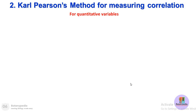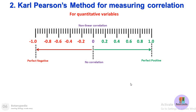Now we talk about the second method, the most famous and most commonly used — the Carl Pearson method for measuring correlation. In biostatistics, variables can be categorized into quantitative and qualitative types. Quantitative variables are those which can be measured in terms of numbers, such as height and weight — they are numerical in nature.